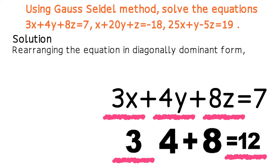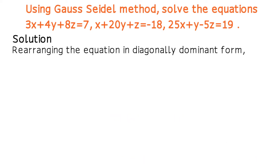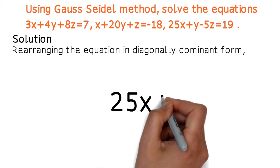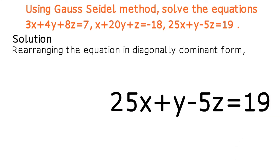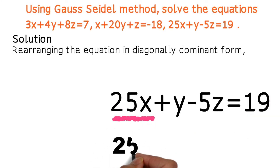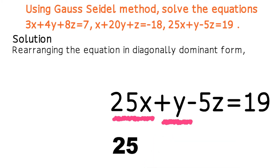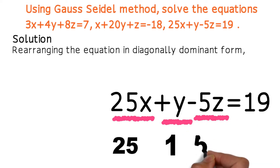Looking at the equations for x, y, and z coefficients: the last equation is 25x plus y minus 5z equals 19. The x coefficient is 25, the y coefficient is 1, and the z coefficient is minus 5, so this satisfies the diagonally dominant condition.